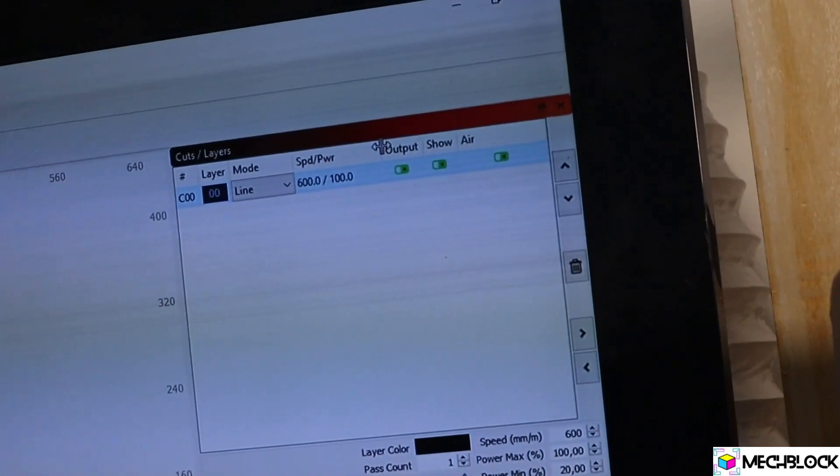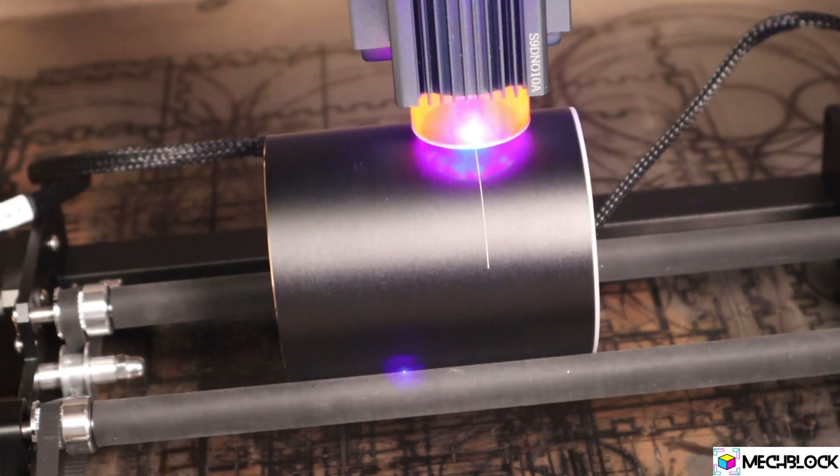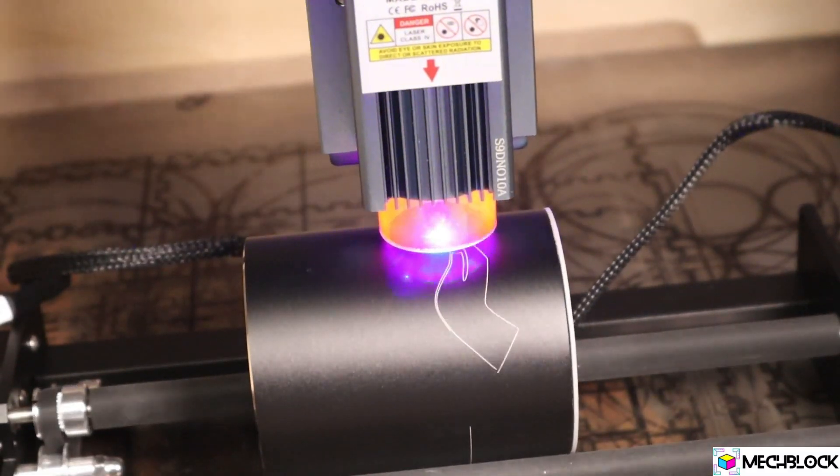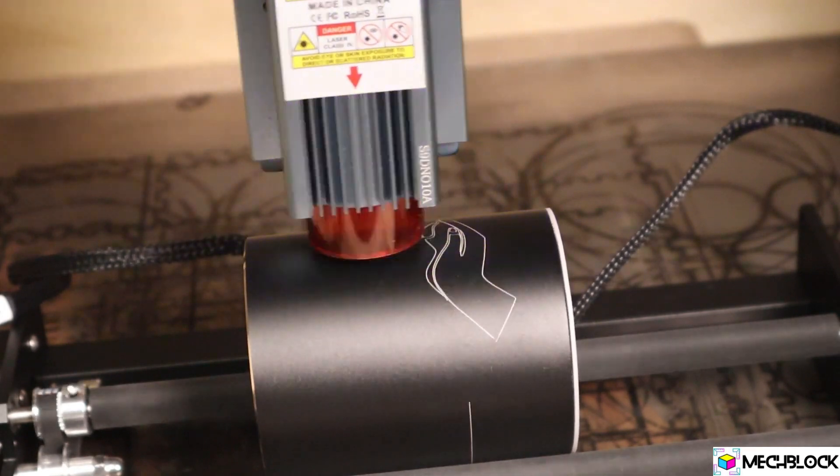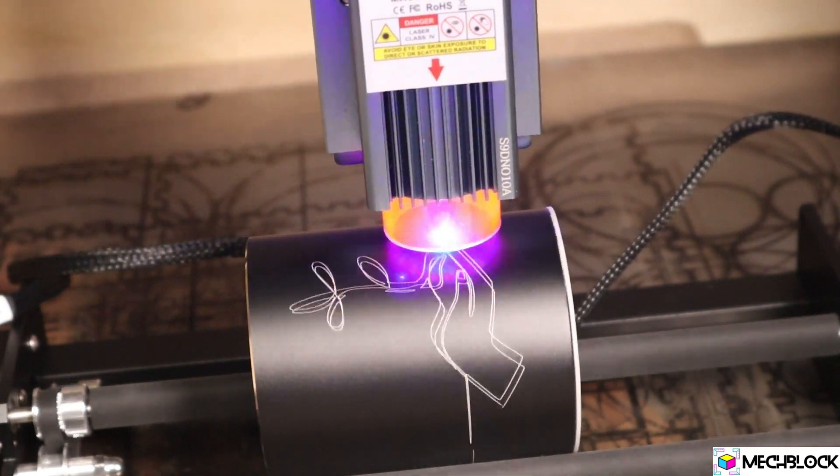But you need to watch when engraving vector images. All of the rubber roller rotary system designs will start to lose position when engraving complex vector images. The engravings will start to get offset like this pattern I have tried to engrave on this cup. This is why you should always use line by line scanning.